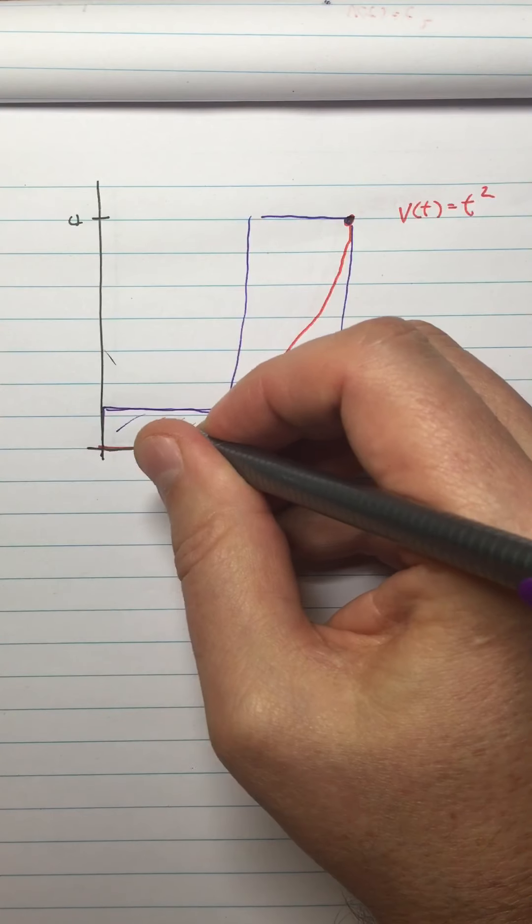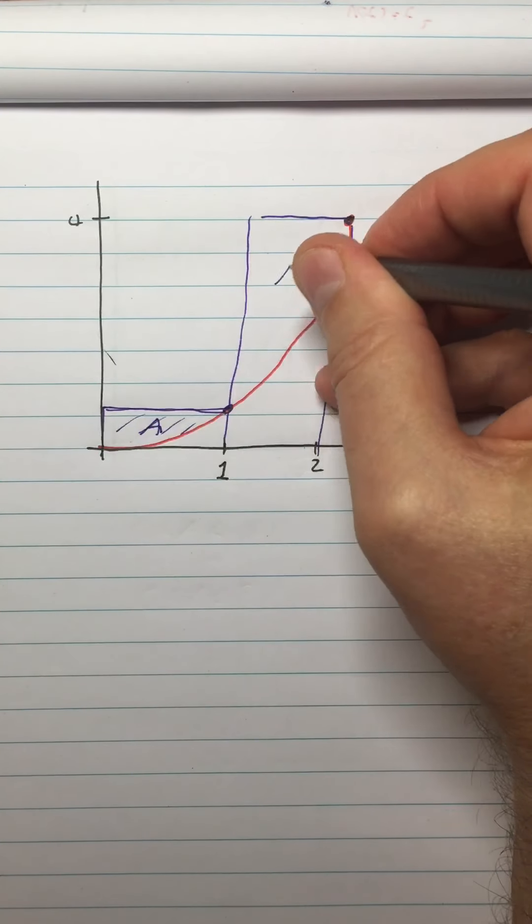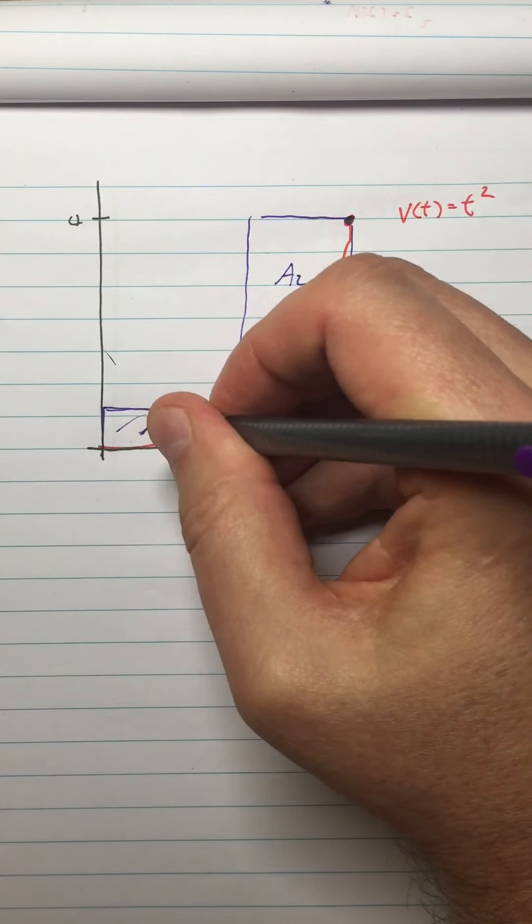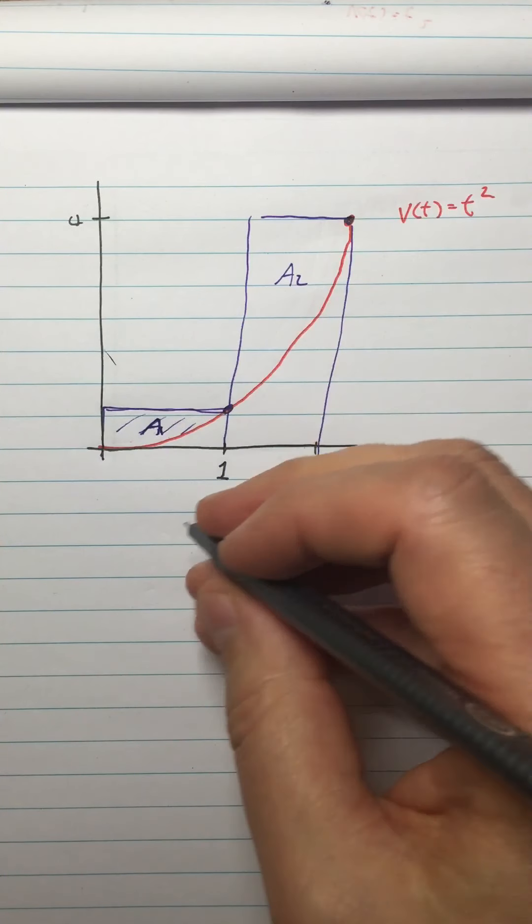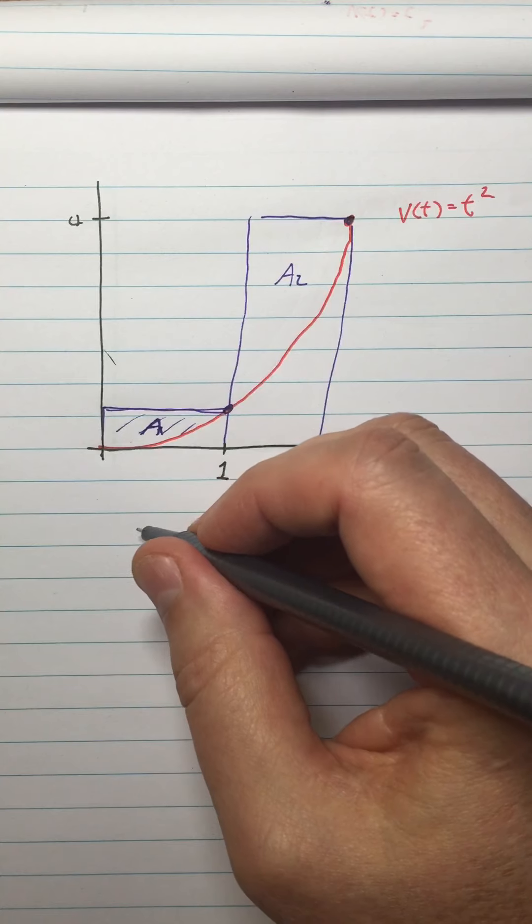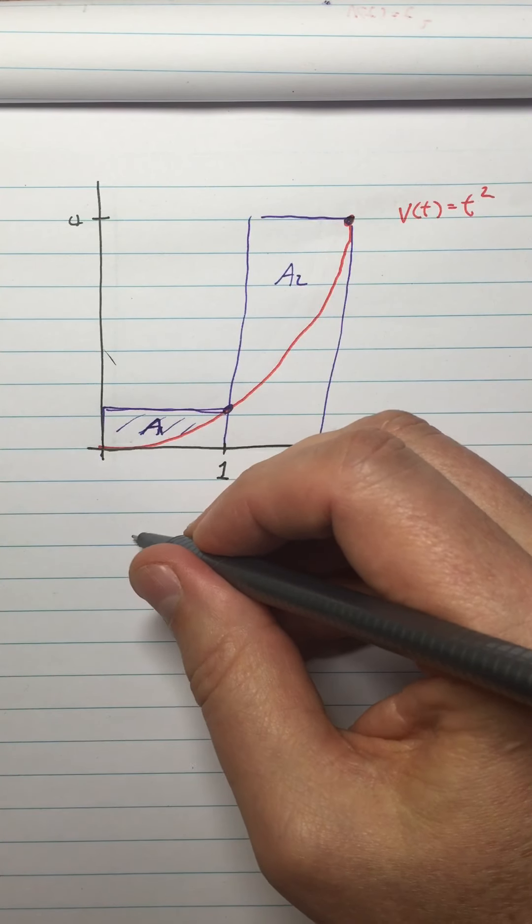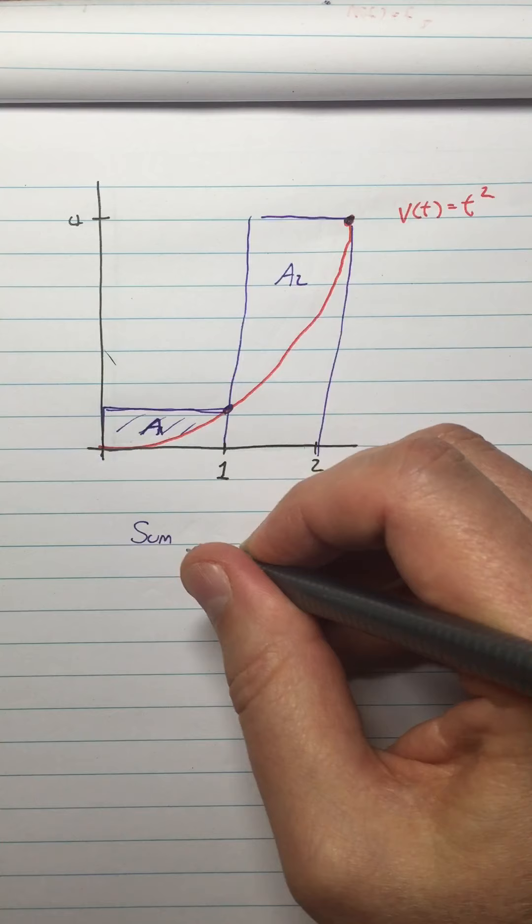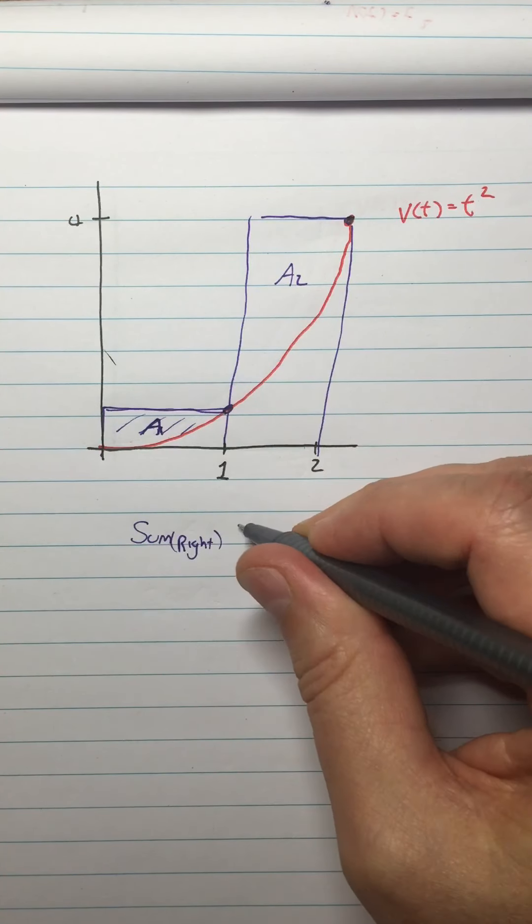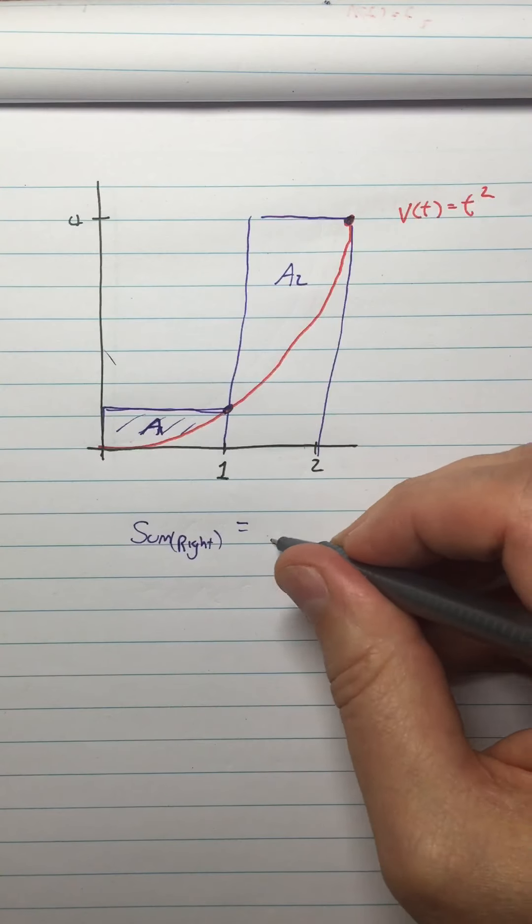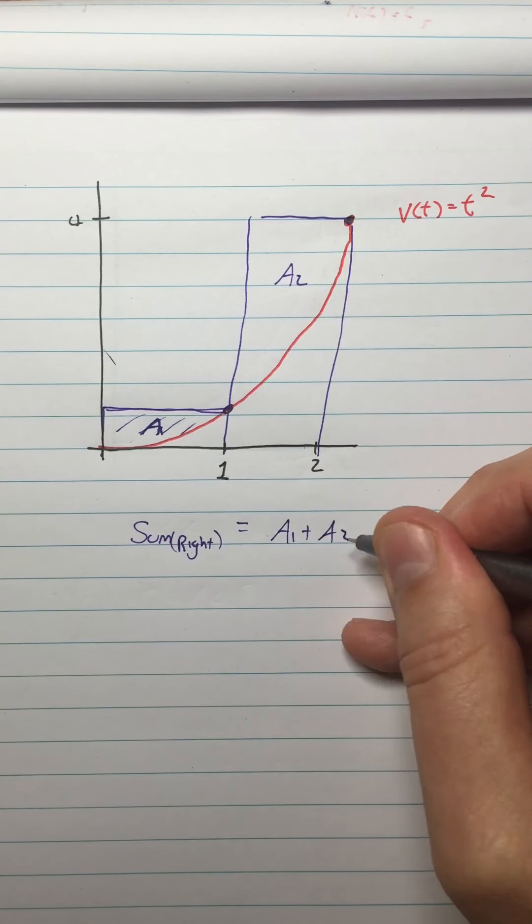So what I'm going to do is I'm going to call this A1 and I'm going to call this A2. And what I'm going to say is that this A1 plus A2, I'm going to call it the right rectangular sum. So we're going to call it sum right, sum from the right. Is equal to A1 plus A2.